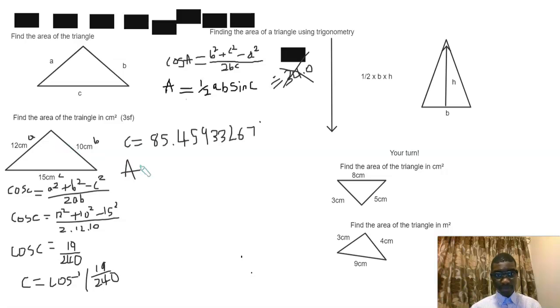Now to find the area, we can use this because we know what C is. So area is half times a—now we can keep a as a and b is b because we have found C. So a is 12.